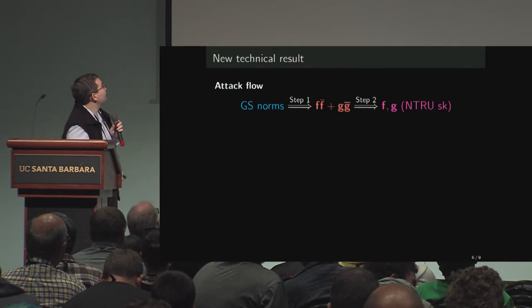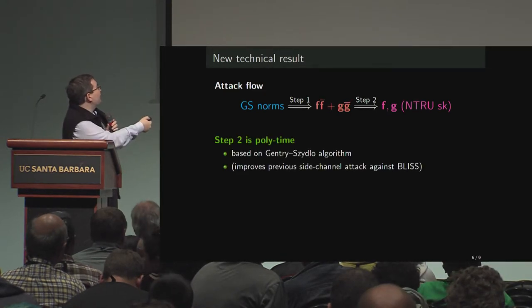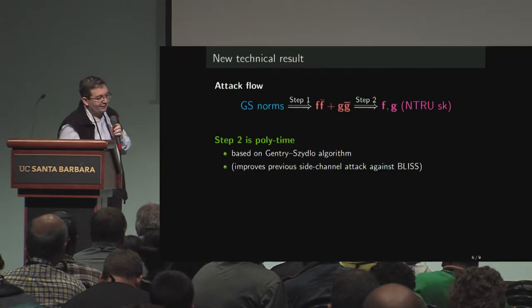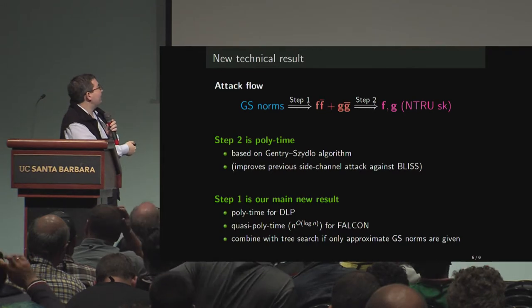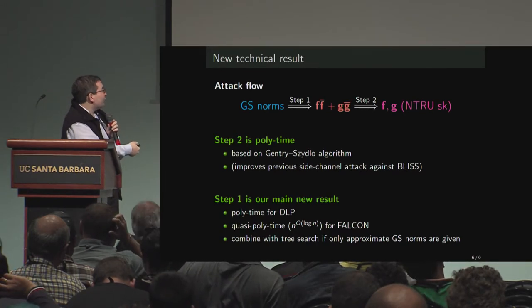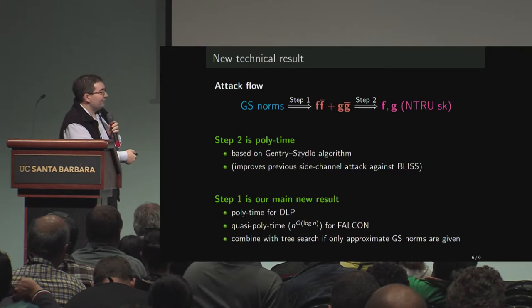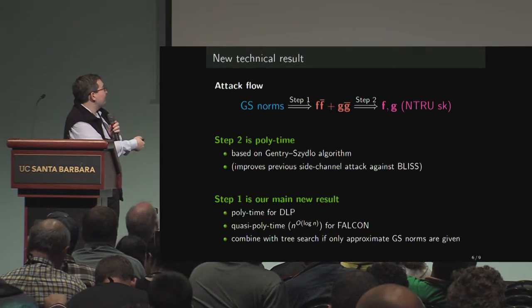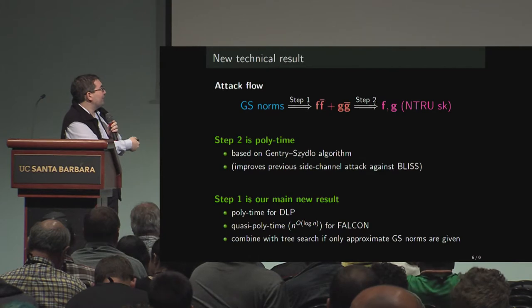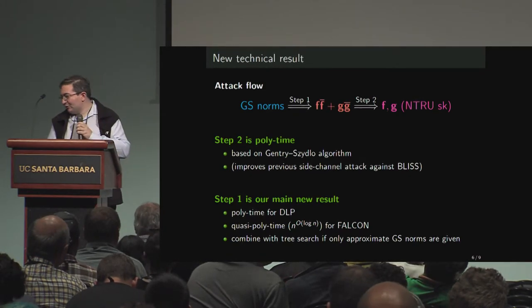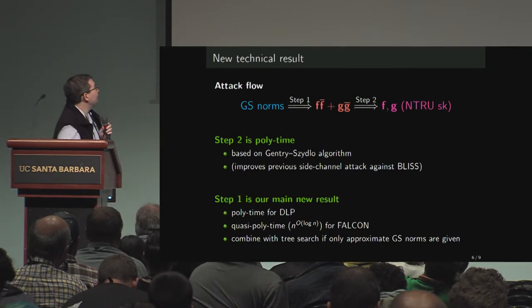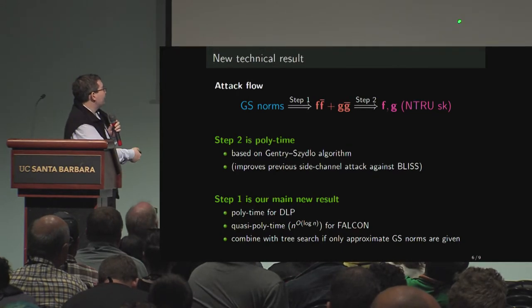In this polynomial, f and g are elements of the secret key, and after that it's easy enough to recover the secret key. Step 2 is polytime and is basically the Gentry-Szydlo algorithm. Step 1 — the main contribution — is polytime for DLP and quasi-polytime for Falcon. These are the timings for exact values of the GS norms, and if you have approximate values, you can combine it with a tree search to make it work even with approximate values.